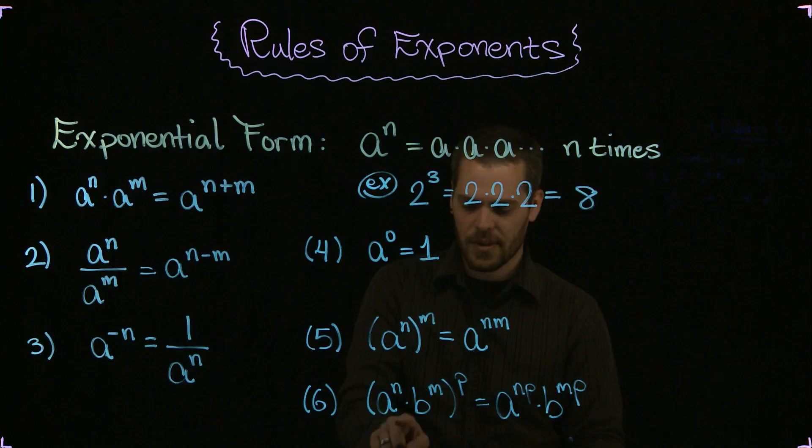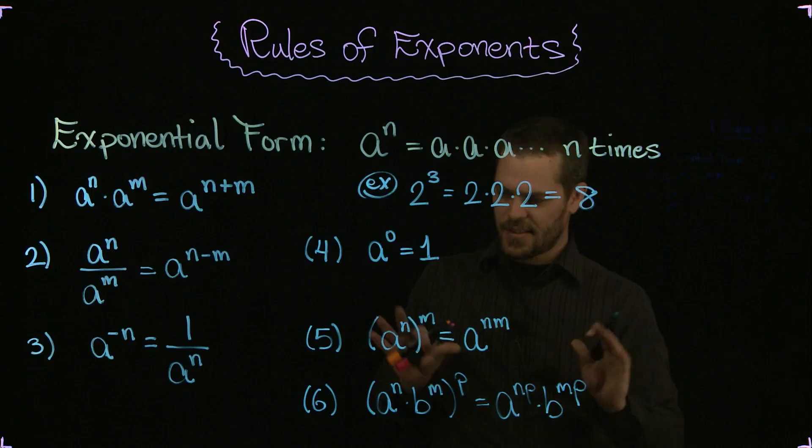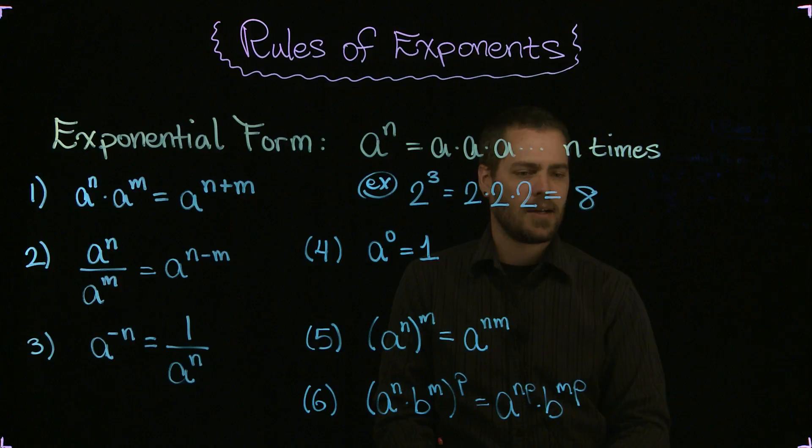Now this is only true if you're multiplying here, or dividing as I'll show in a different rule, but if you have a plus or a minus here, then be very careful, you cannot simply distribute those powers. And again, I'm going to show examples of all these rules, but I just wanted to stick those rules up there for you right away before I continue with a bunch of examples.